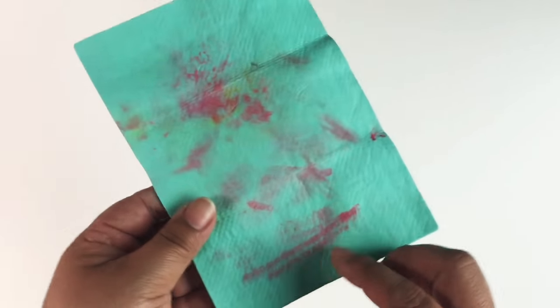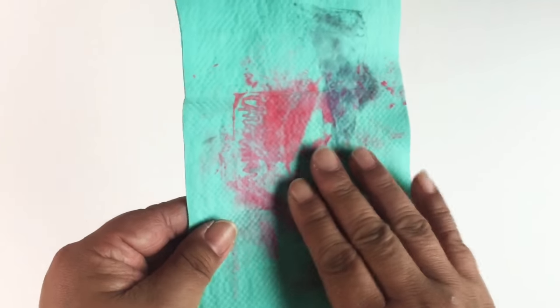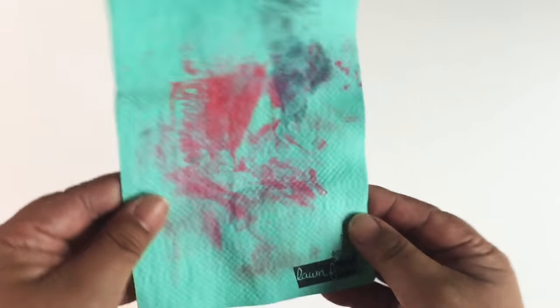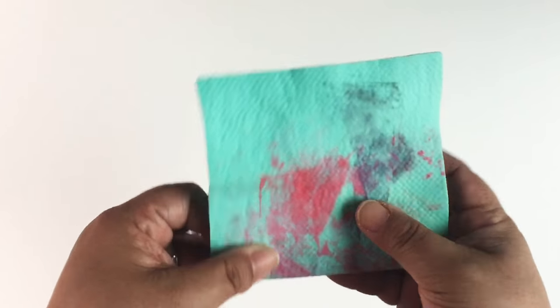A chamois to clean my stamps with. This one you just wet and then you just wipe the ink off of your stamps. I have used this, obviously, but it folds up nicely.